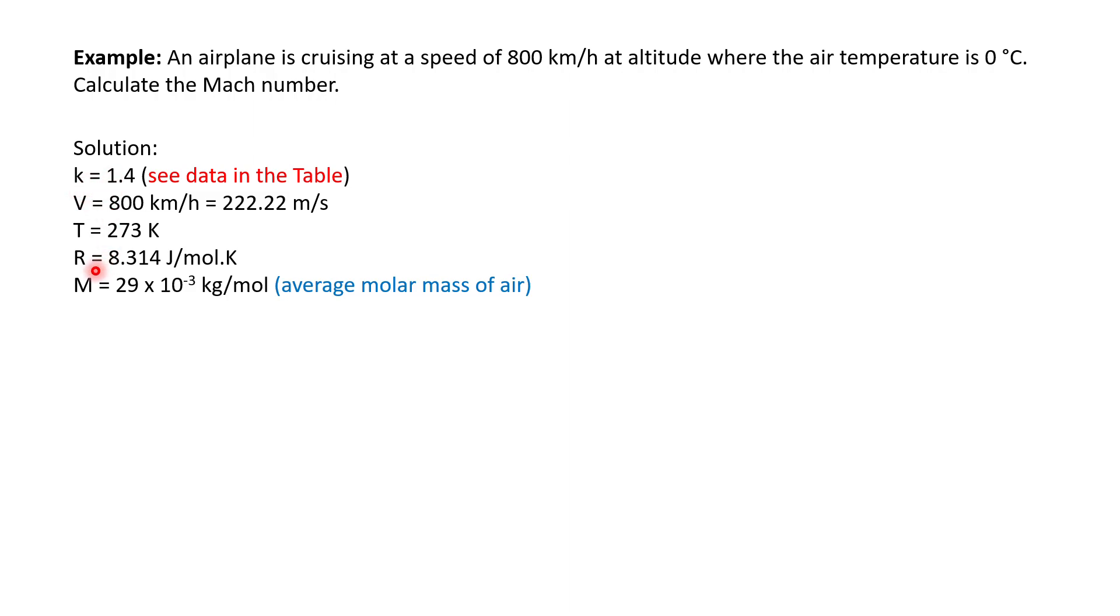We get R is always constant, remember, 8.314 joules per mole Kelvin. And M is—this is an average molecular weight of air, 29. Remember, the unit must be kilogram per mole, so it's 29 times 10 to the power minus 3. And the temperature is given there. Based on these known parameters, we are able to calculate the speed of sound C. And then we apply the definition of Mach number, and we find out Mach number of 0.67.